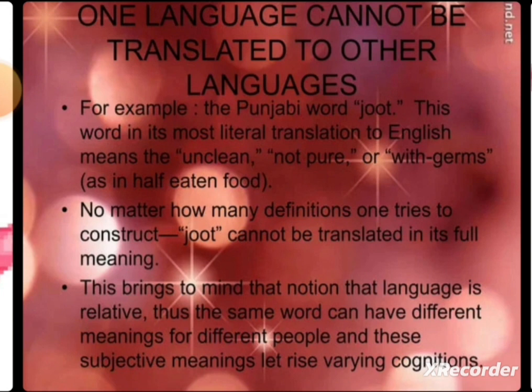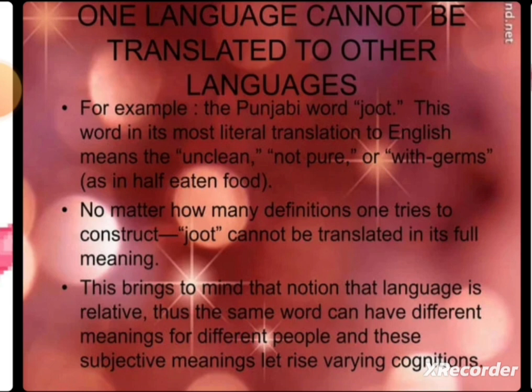One language cannot always be translated to other languages; there are certain words which don't have any existence in any other culture. For example, the Punjabi word 'Jhout,' which means 'jhoutha.' Its most literal translation to English means unclean, not pure, with germs — which is half-eaten food. No matter how many definitions one tries to construct, Jhout cannot be translated in its full meaning in English. But in Punjabi, we know exactly what Jhout is.